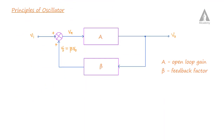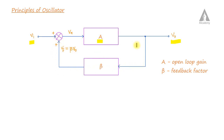Now let me go to the principles of oscillator — the working principle of the oscillator. Here you can see this is a simple representation of an amplifier circuit. We have an input voltage Vi and we will get an output voltage V0.